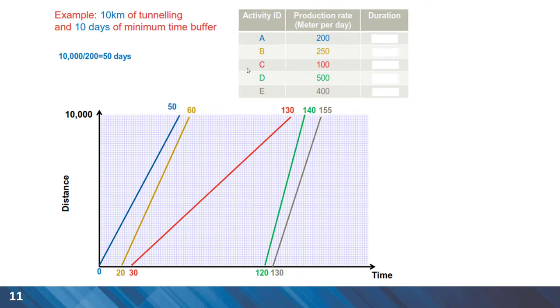Another example that we can look at is a tunneling project with the length of 10 kilometers or 10,000 meters. Here, the production rates are given and we can work out the duration. As an example, for activity A with a production rate of 200 meters per day, we can find the duration of 50 days. For activity B with a higher production rate, the duration will be 40 days and so on. We can calculate the duration for all projects.